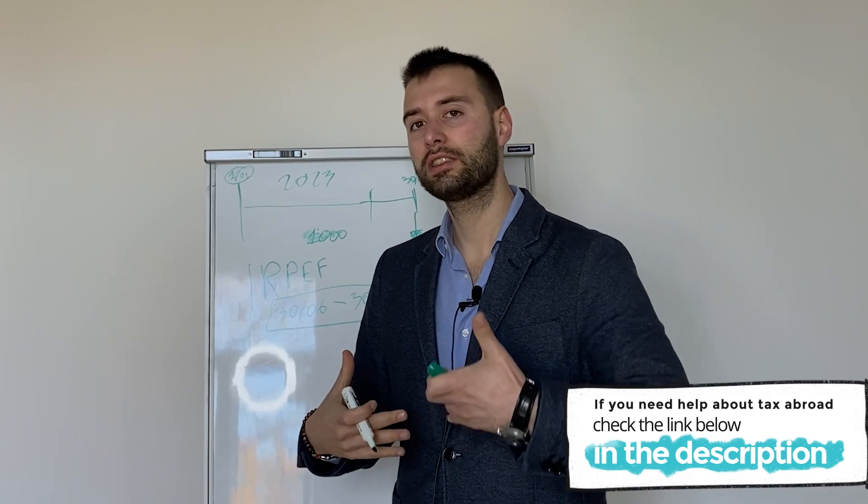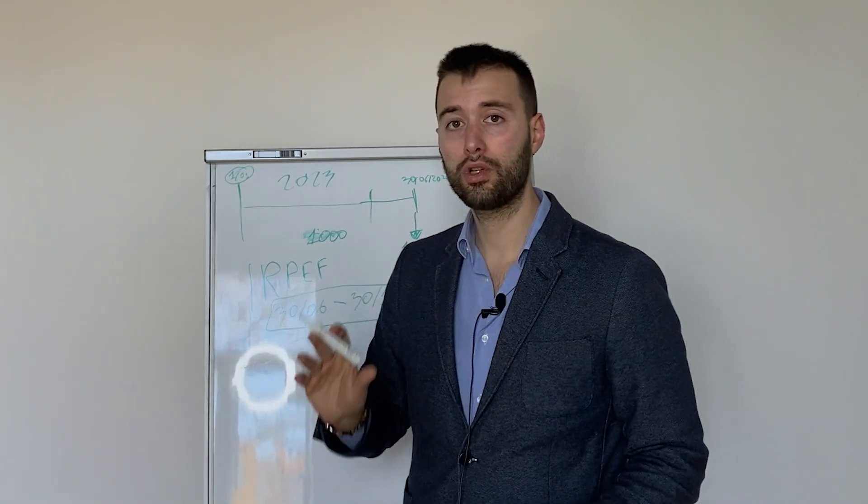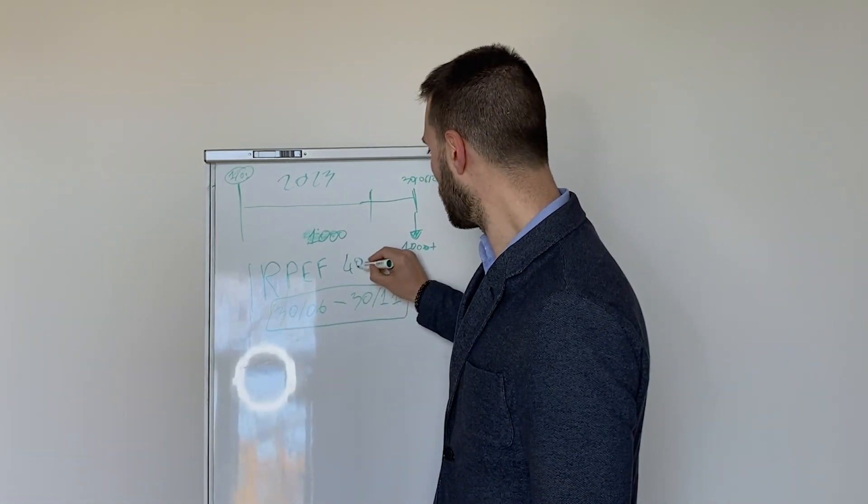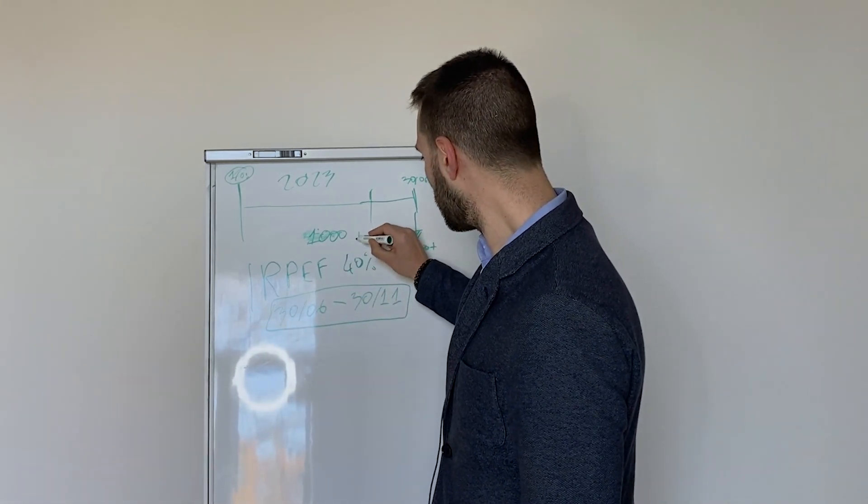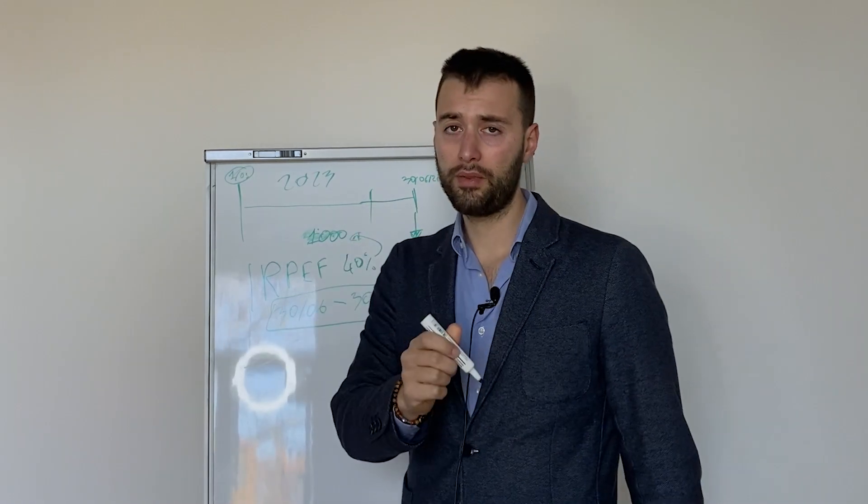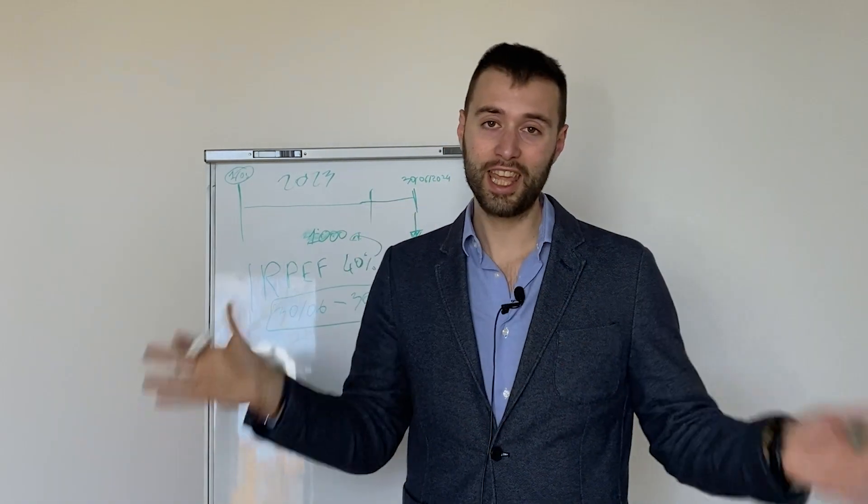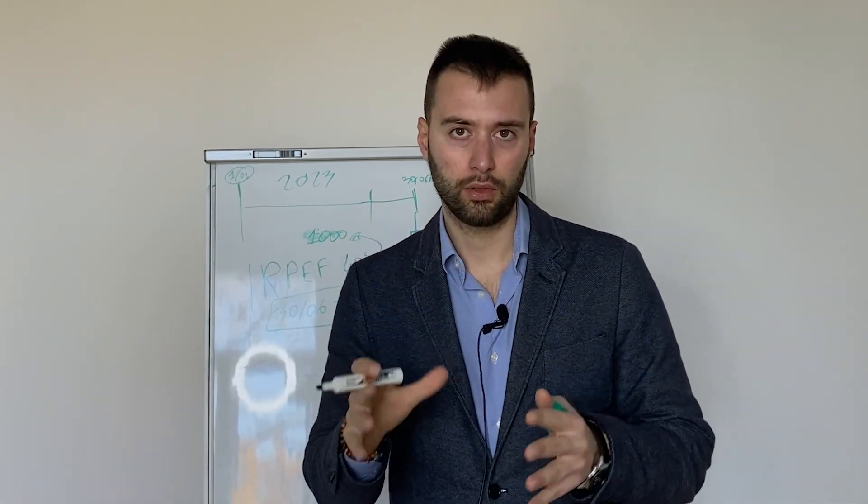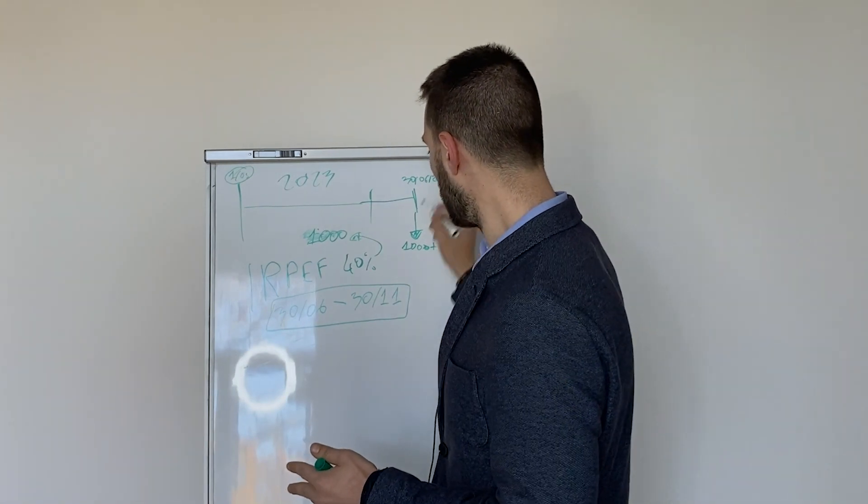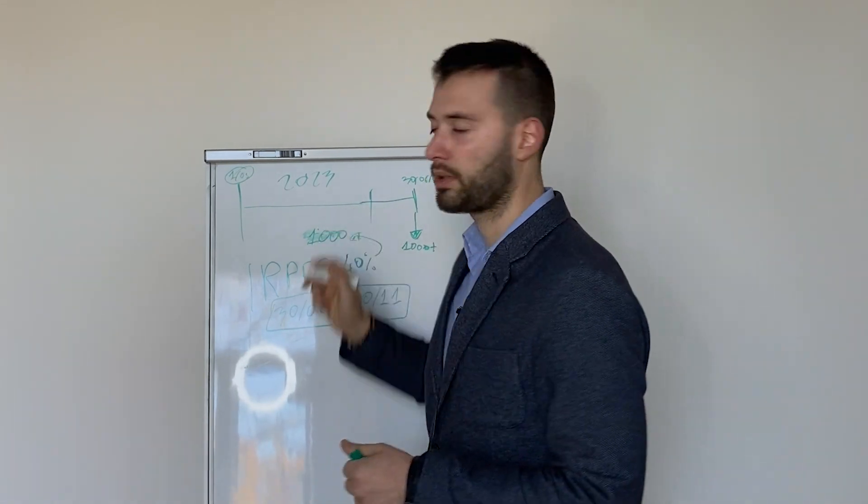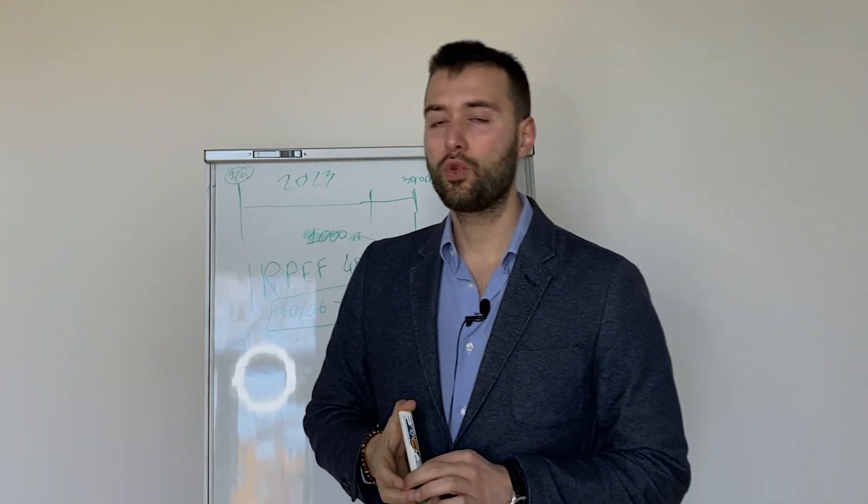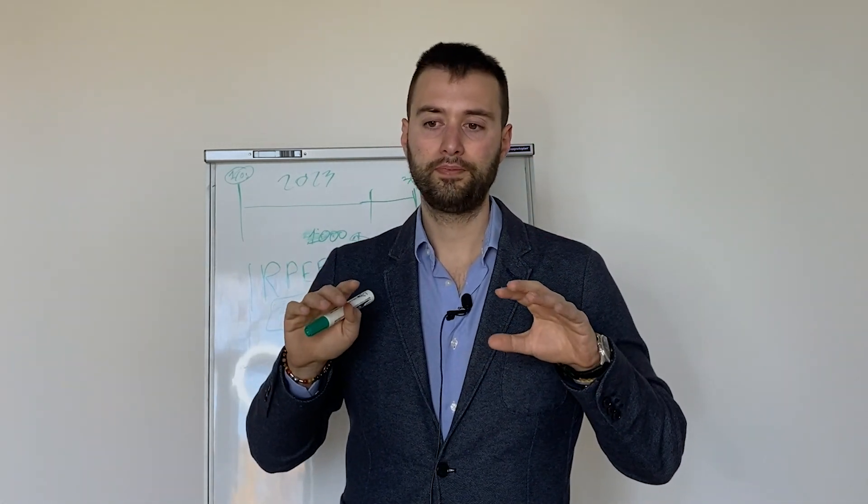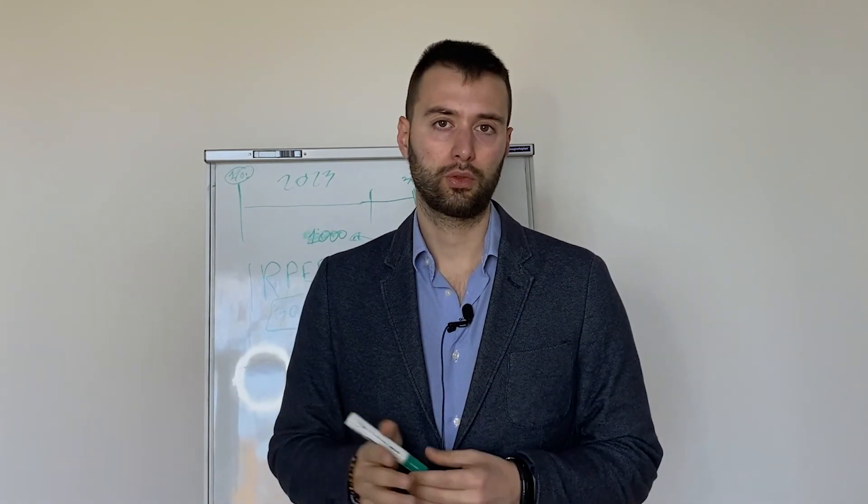Why? Because you not only pay the taxes on the 30th of June, you pay also an accrual, an advance payment. Because in Italy, on the 30th of June, if you use the historic method, you pay 40% of the taxes of the previous year, because they assume that you will have the same tax impact for 2024. So in 2024 you will pay this plus 40%. So the first year actually you will